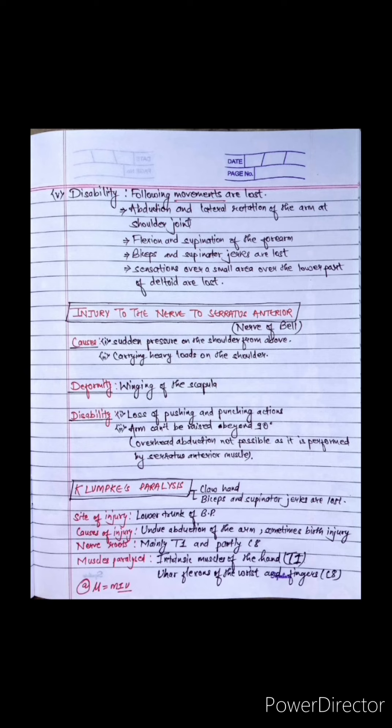Another term is Klumpke's paralysis. It is a claw hand, and biceps and supinator jerks are lost, which are its disabilities. Site of injury is lower trunk of brachial plexus. Causes of injury include abduction of the arm, sometimes birth injury.